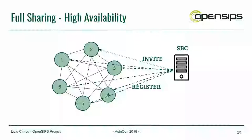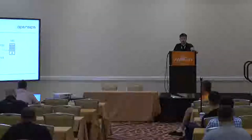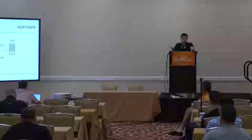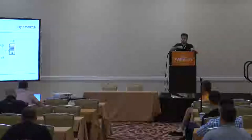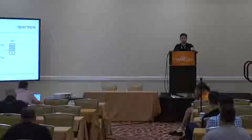In full sharing, we have an SBC front-ending the whole platform and pushing traffic to the full-meshed cluster, with invites, registers and whatnot equally spread. We can fully afford to lose nodes — for example, if node six has an issue, the service stays unaffected because the data is fully replicated and invites can hit a different node and calls will still connect.